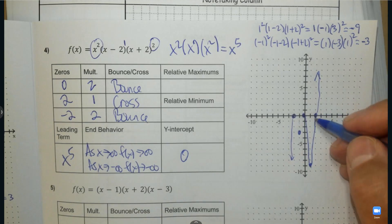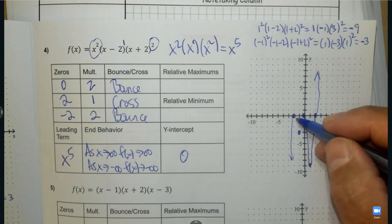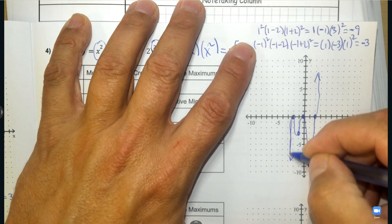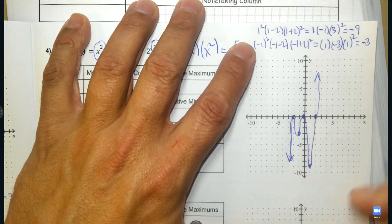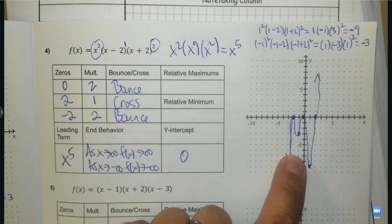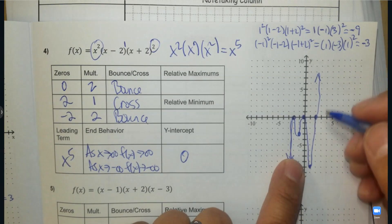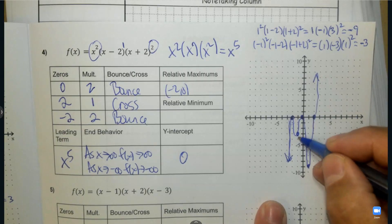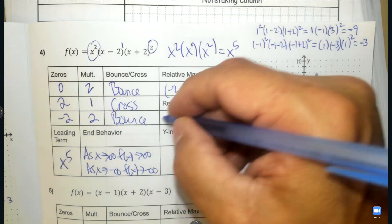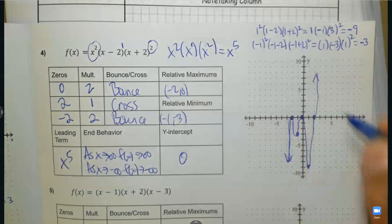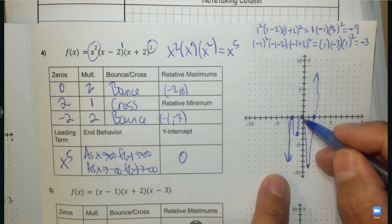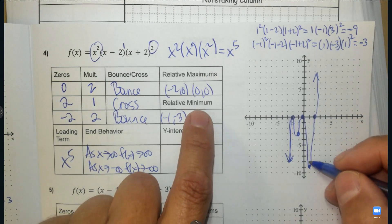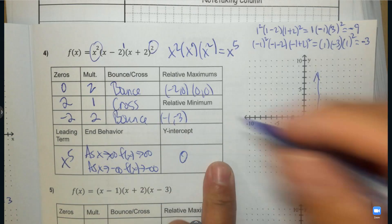Double-check: it bounces at 0 and it bounces at negative 2, which it will. We have a maximum at negative 2 and 0. We have a minimum at negative 1 and negative 3. We have a maximum at 0 and 0. And lastly, we have a minimum at 1 and negative 9.